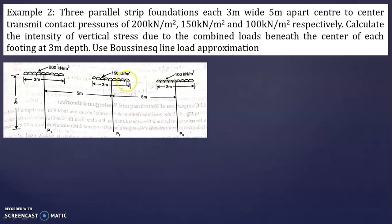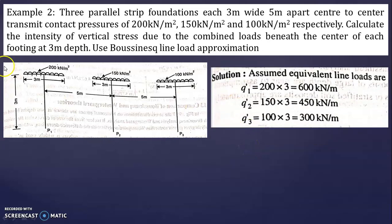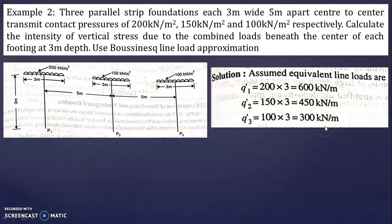Use the Boussinesq line load approximation formula. First, assume equivalent line loads by multiplying intensity by width: Q1 = 200×3 = 600 kN/m, Q2 = 150×3 = 450 kN/m, and Q3 = 100×3 = 300 kN/m.